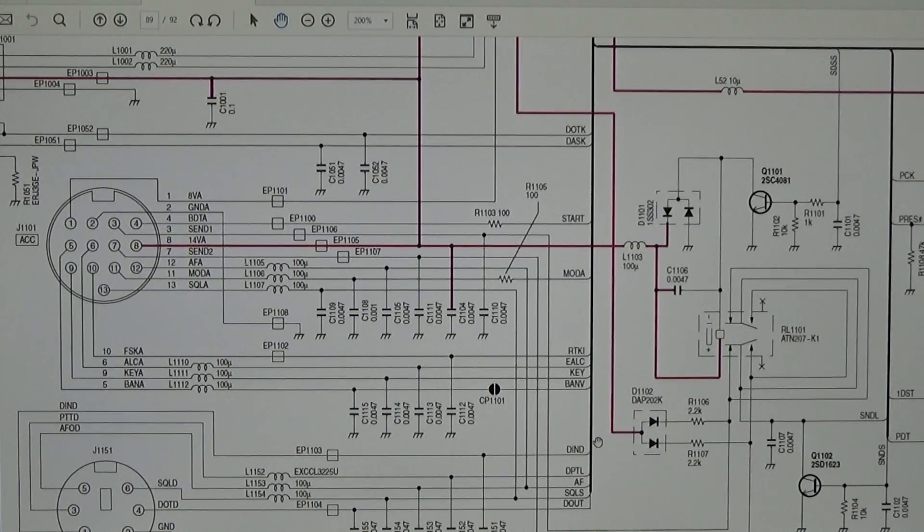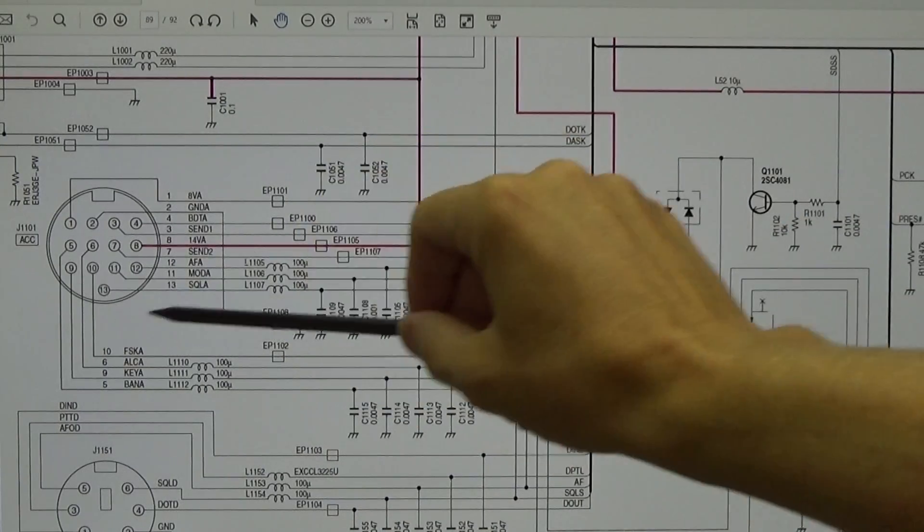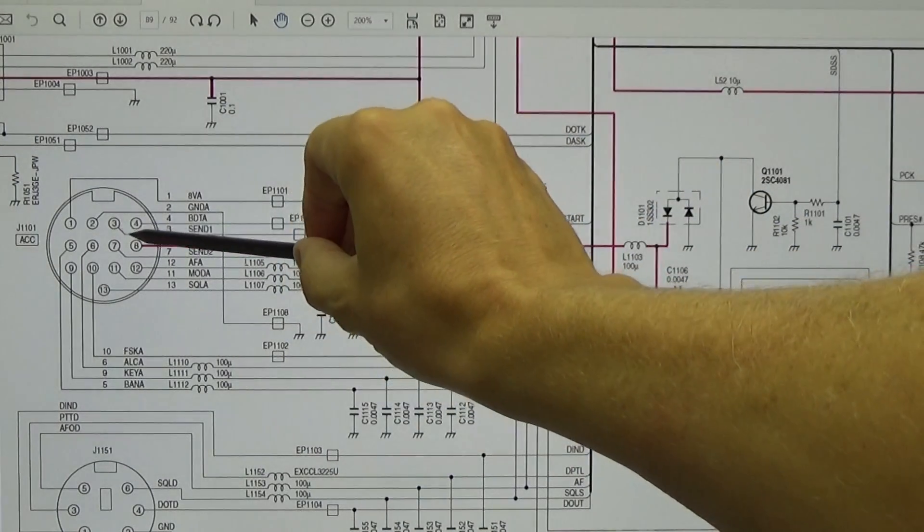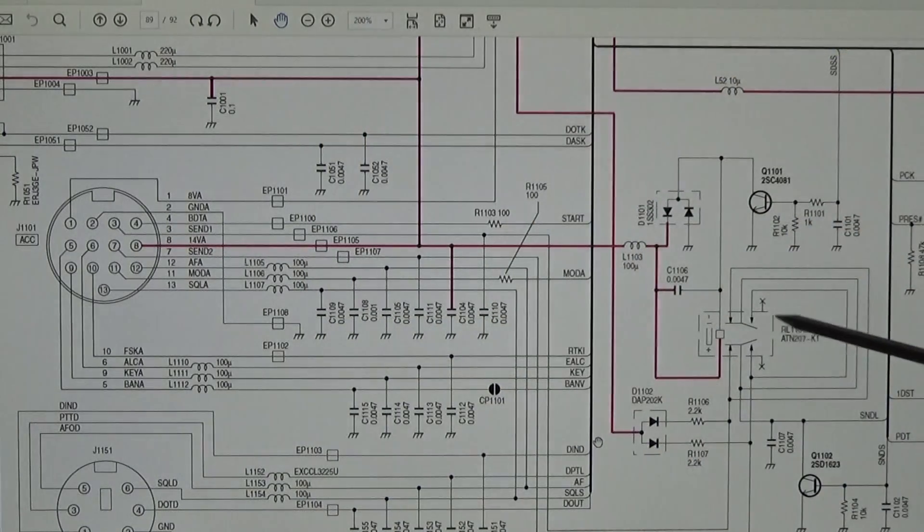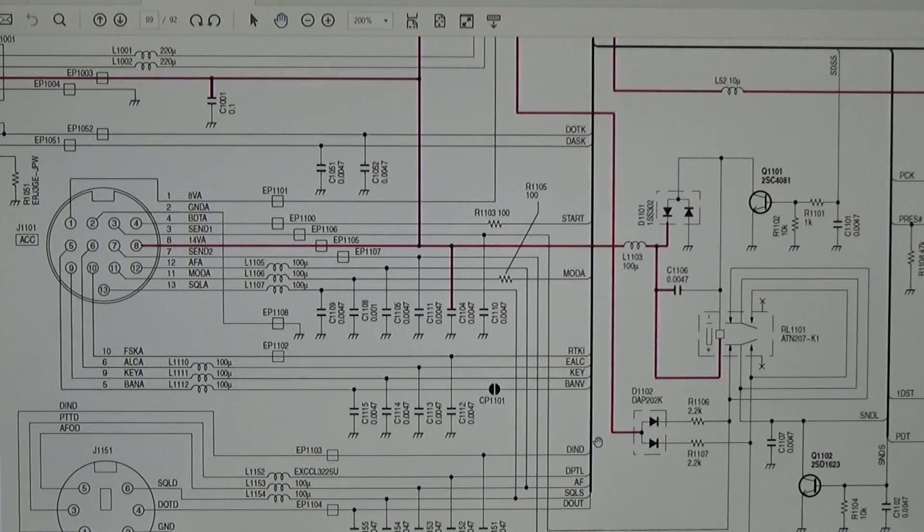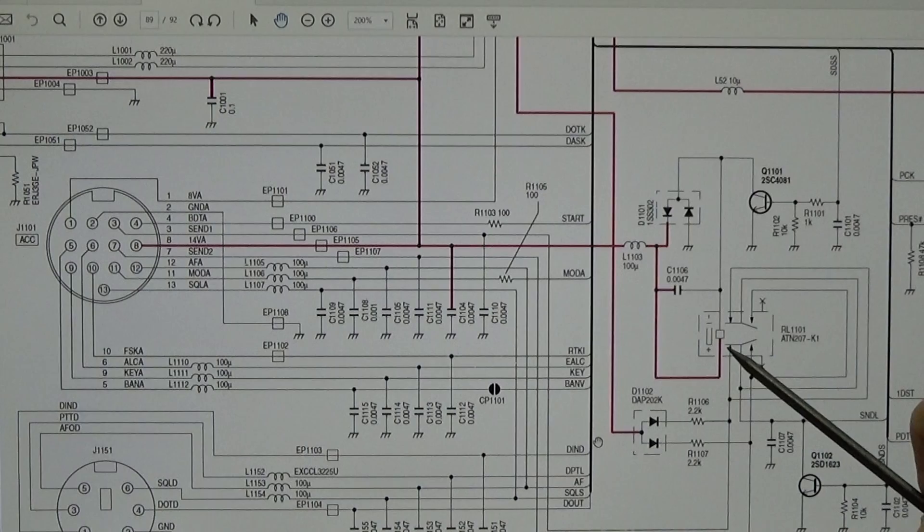Here on the schematic we see our ACC socket and we see pin 3. When we follow along pin 3 we come here to this relay. We have both contacts, and that is because we can operate this radio on HF and 50 megahertz as well as on VHF and UHF.